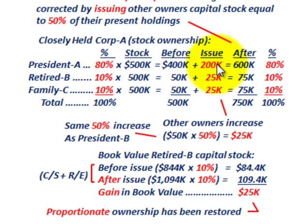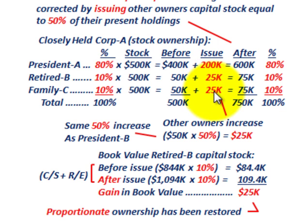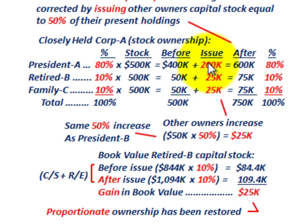When president A went out and bought that additional $200,000 worth of stock — making a 50% increase from $400,000 up to $600,000 — preemptive rights required that both retired shareholder B and family member C also be allotted a 50% increase in their stock. They were sitting at $50,000, so a 50% increase brings them up to $75,000 each for both retired B and retired C. You can see how we corrected the imbalance.